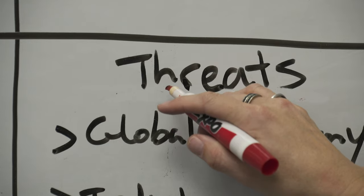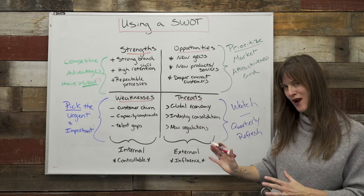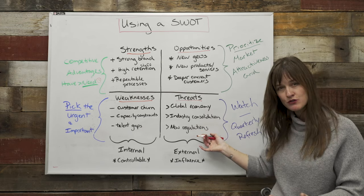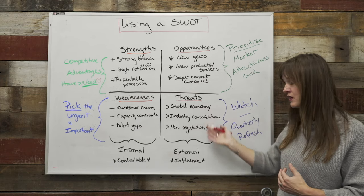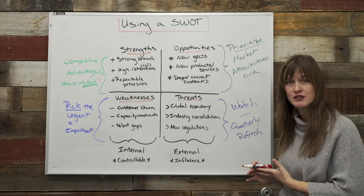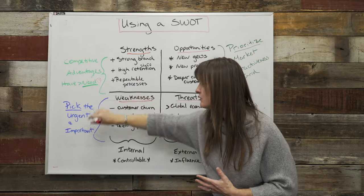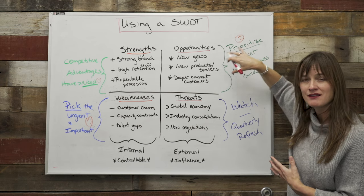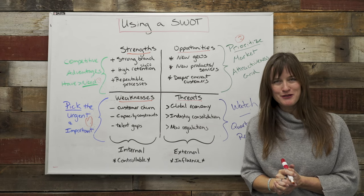And then threats. Honestly, most SWOTs don't have a ton of threats. We don't love threats, but they're super important to be aware of — watch the global economy, industry consolidation, new regulations. You can't really do anything about those, but you can certainly be prepared for them. Agree to watch those that are important and bring them into your quarterly refreshes to determine whether you need to turn them into initiatives. So your initiatives come from those competitive advantages you need to create, those weaknesses that are urgent and important, and those opportunities you're prioritizing. With that, you've put your SWOT to work. Thanks for tuning in — subscribe to our social channels. Happy strategizing.